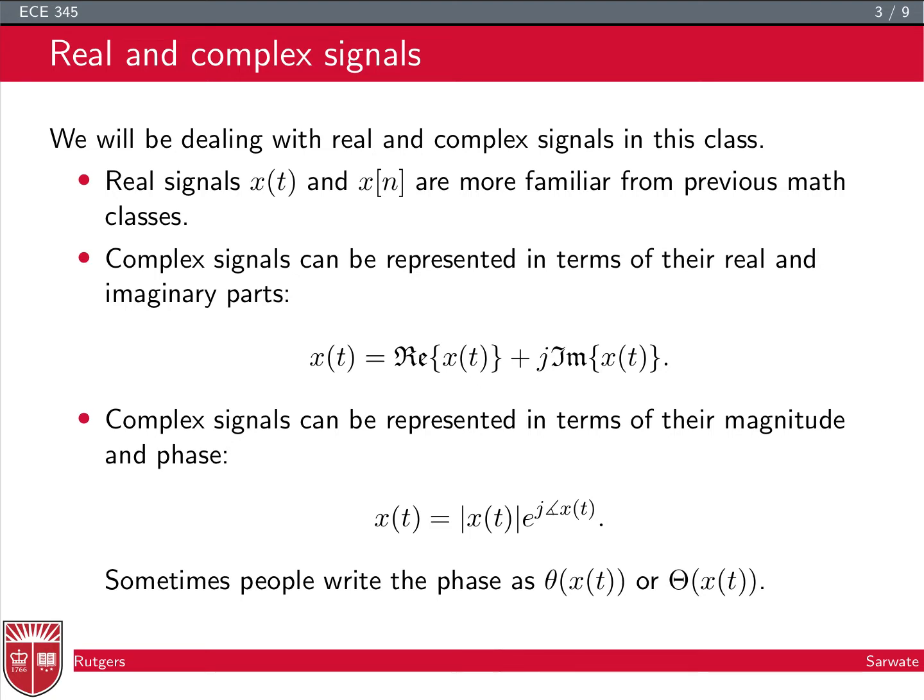So for continuous time signals, you're familiar with a lot of operations you can do on those signals. Complex signals probably you have a little less experience with, but a complex signal is a signal whose output, the value that the signal takes on, is a complex number. And so at each time t, we can ask what is the real part of x(t) and what is the imaginary part of x(t). And so we get these two functions representing the real part of the signal and the imaginary part of the signal, and we have this j here to combine the two.